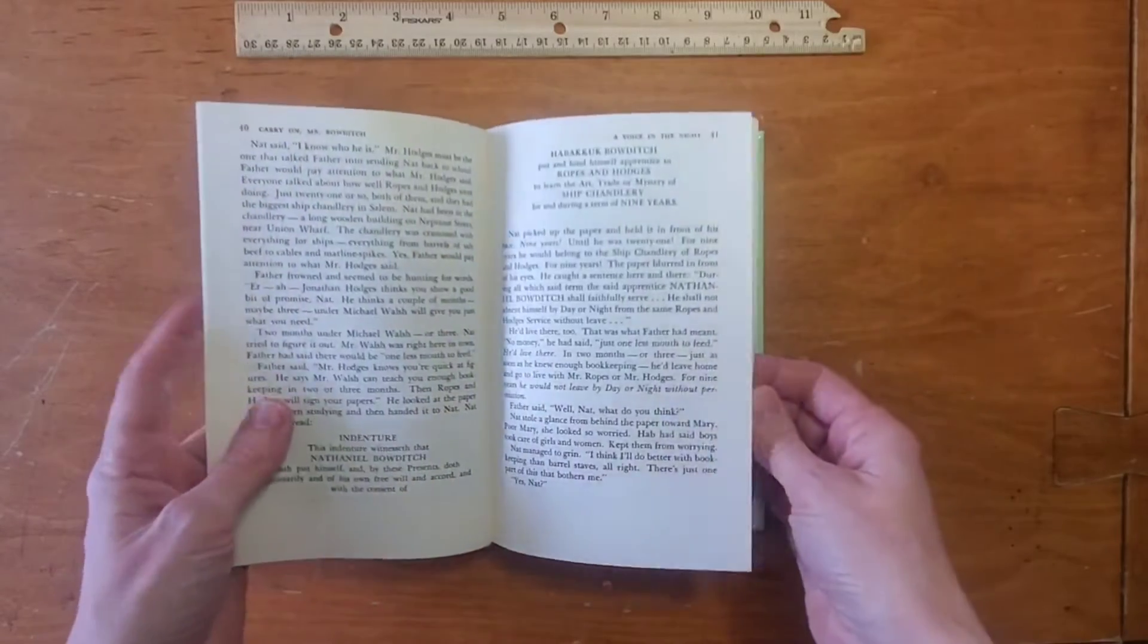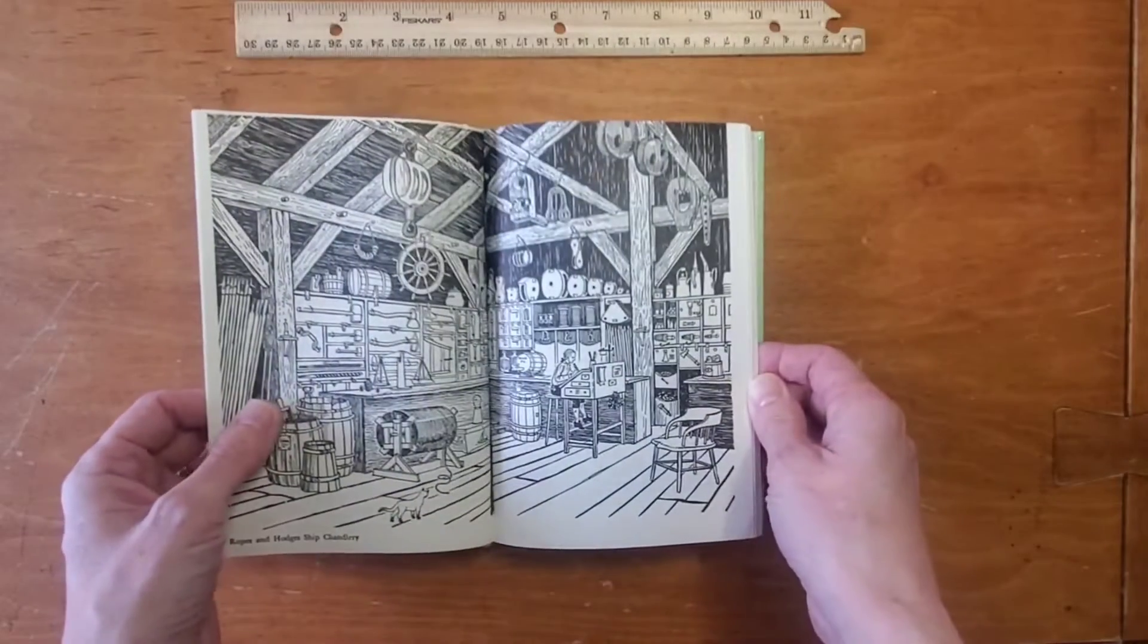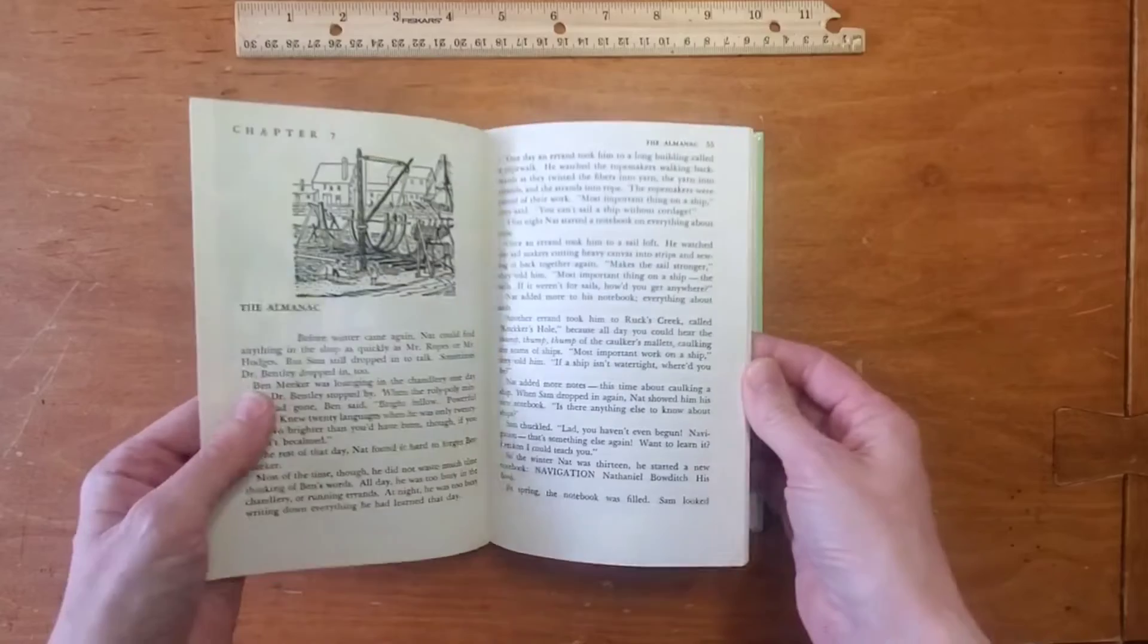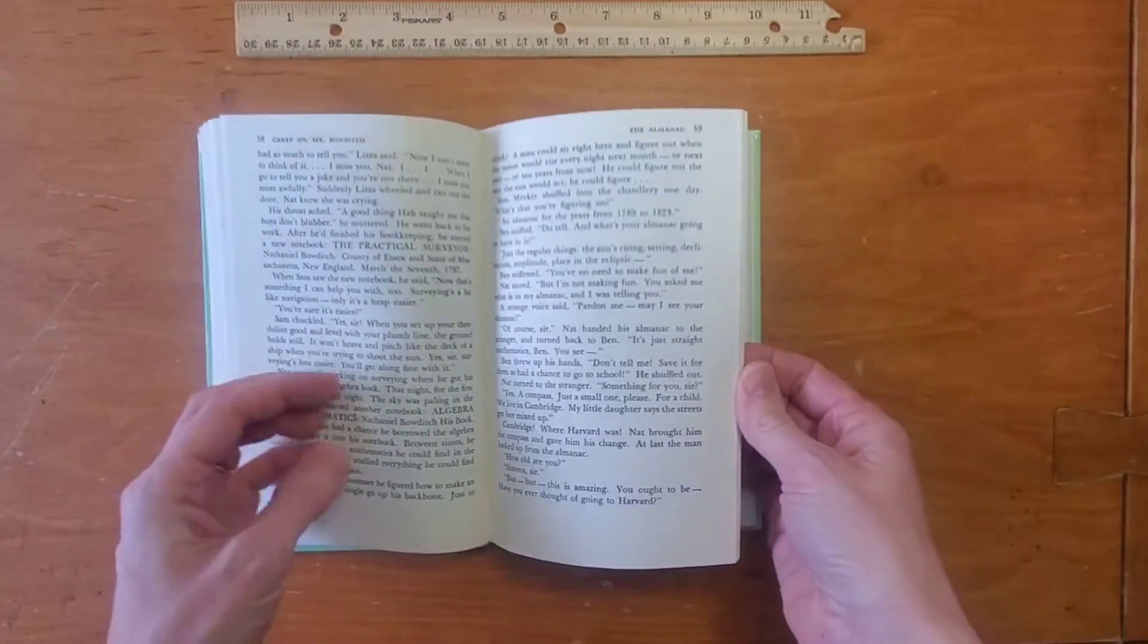Then as a young man, he was indentured to work at the Chandlery. He did that until he was about 21. Then he started sailing on ships.